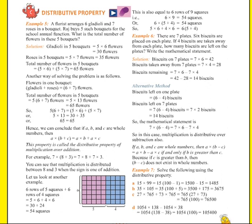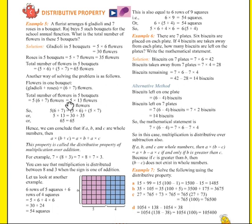Another way of solving the problem: first we find the total flowers in one bucket, which is six plus seven — gladioli six and roses seven. Then the total number of flowers in five buckets is five into (six plus seven) flowers, that is six plus seven equals thirteen, and thirteen fives are 65.